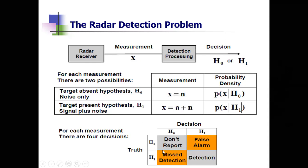A radar receiver is a combination of LNA, mixer, IF stage with matched filter, the envelope detector (second detector), and the threshold detection decision-making process. There are two possibilities: H0 assumes only noise present, so x equals n - only noise. H1 is signal plus noise, that is A plus n, where A is the signal amplitude.